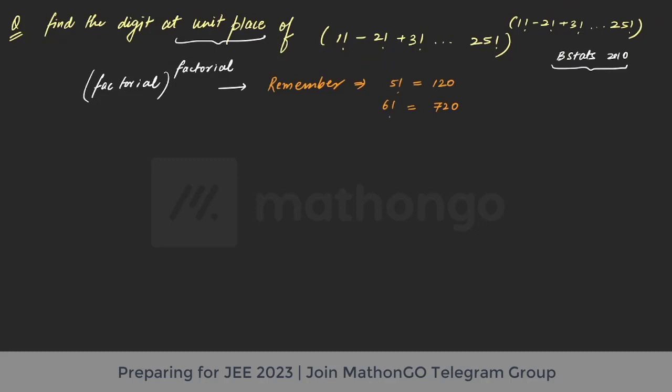So obviously, 6 factorial which will be multiplying it by 6 will give you 720. That means the position or unit position is fixed. It will be 0 for 6 factorial and 5 factorial. Now the only issue is that this means they will not contribute to unit place.